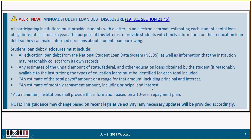In the loan guidelines, we added an annual student loan debt disclosure section. This statute, which went into effect last session, requires institutions to provide a letter in electronic format informing students of their student debt levels so they can be better educated about borrowing. Financial Aid Services is taking over this piece of the statute and program rules. We incorporated it into the guidelines to provide additional clarity and help guide institutions on how to implement this requirement.